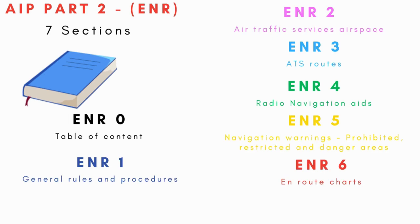Part 2 is for En Route — you might need this one more because it gives you an overview of national airspace zones, areas, coordinates, dimensions, and ATC frequencies. It contains information regarding airspace structure, control zones, control areas, restricted, danger, and prohibited airspace, and who to contact if you want to fly into it. It also gives information about clearance limits — the point to which an aircraft is granted an ATC clearance — as well as RNAV routes, procedures in uncontrolled airspace, altimeter setting procedures, and frequencies of en route navigation aids.